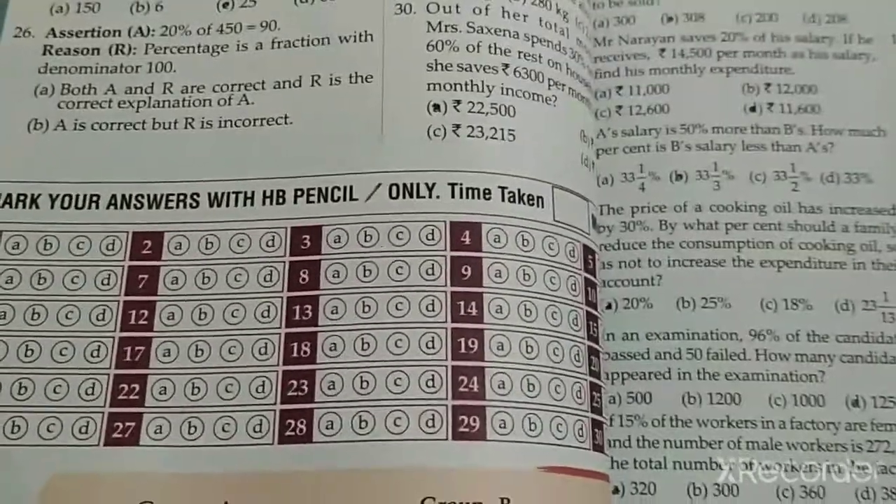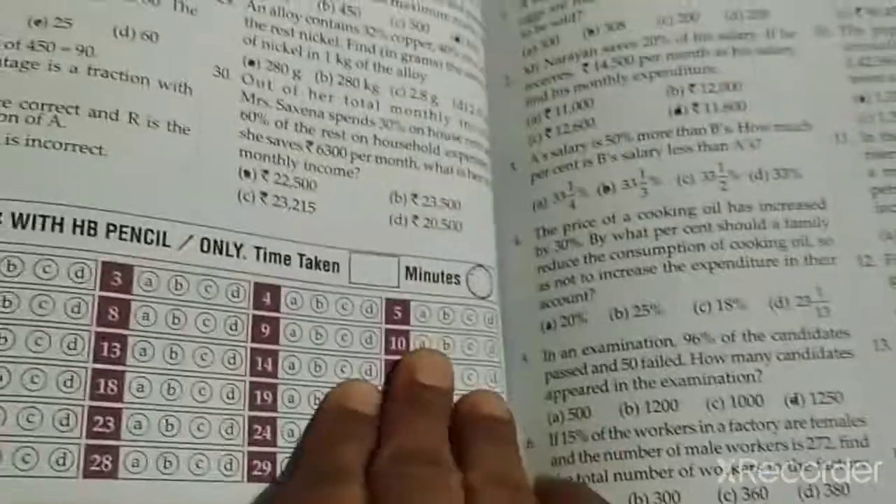Question number 26: again statement hai, 20% of 450 is 90, and when we convert percentage to fraction, we make the denominator 100. Both statements are true, but this is not the proper reason, so D option. Question number 27: 35% of 81 minus some number, if we reduce 35% from 81, that becomes the number itself. So X ko idhar le aao, plus ho gaya, simplify, X ki value 60.